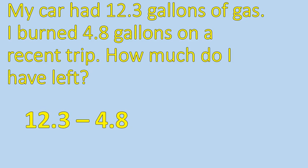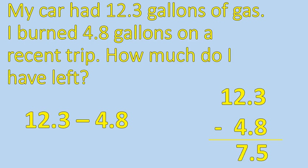The next operation is subtraction. When you are subtracting with decimals, you are decreasing — you have a certain amount and you are making it less. Here it is: My car had 12.3 gallons of gas. I burned 4.8 gallons on a recent trip. How much do I have left? You start with a certain amount, decrease it by a certain amount, so you use subtraction. I set them up vertically, line up the decimals, and solve. 12.3 minus 4.8 leaves us with 7.5 gallons of fuel left in my car.